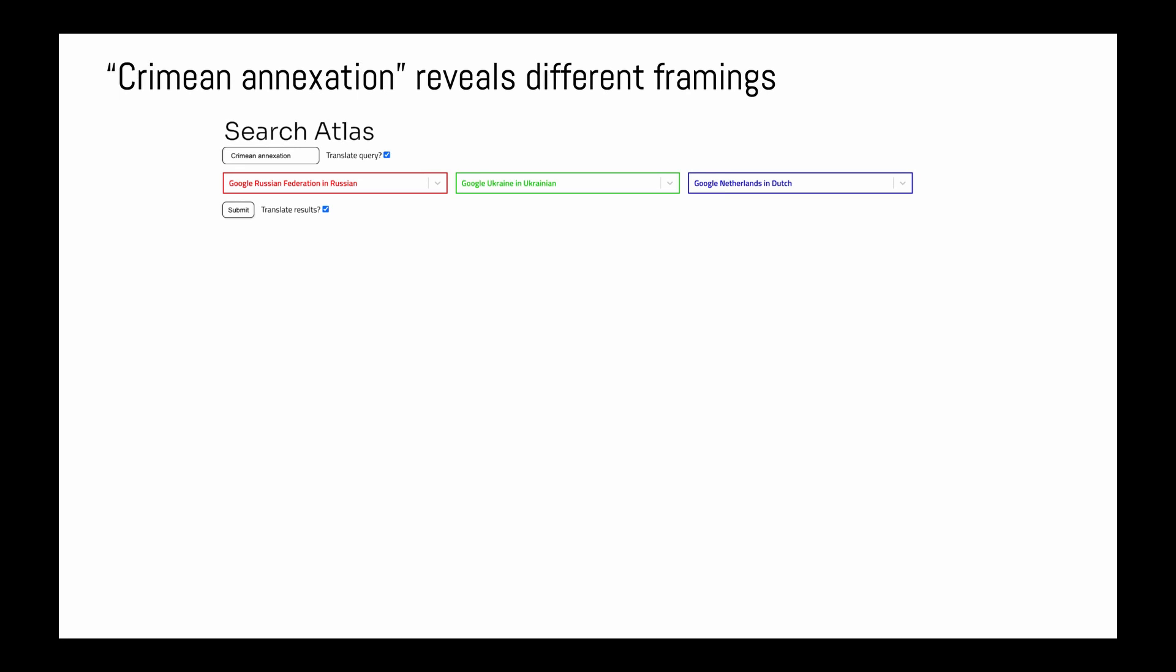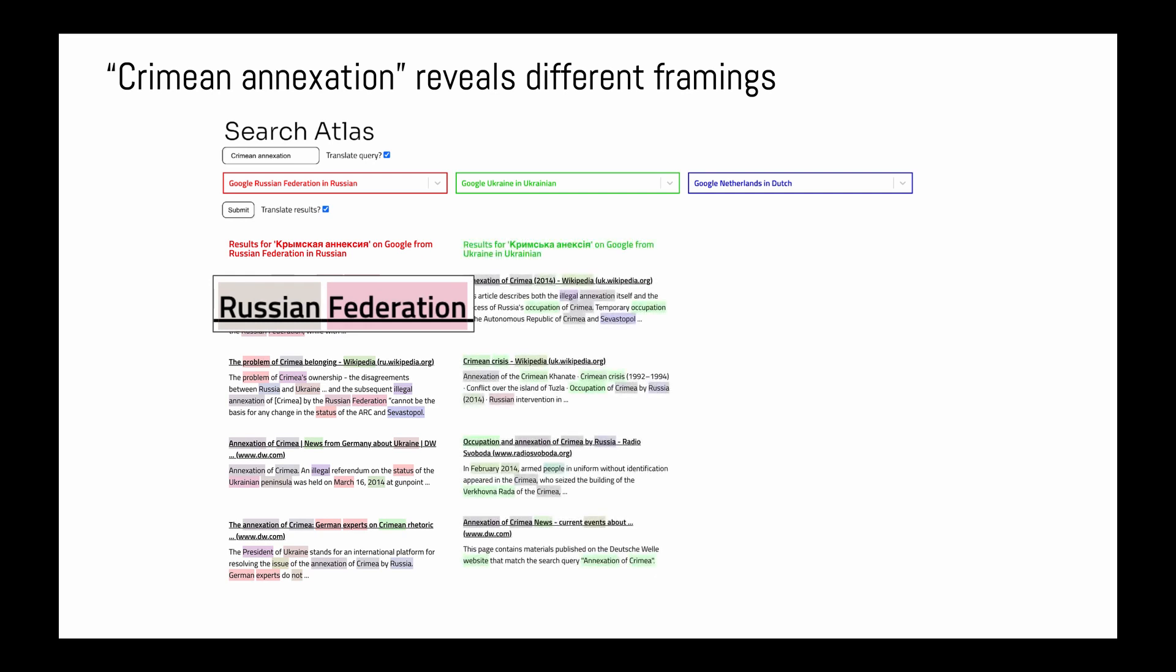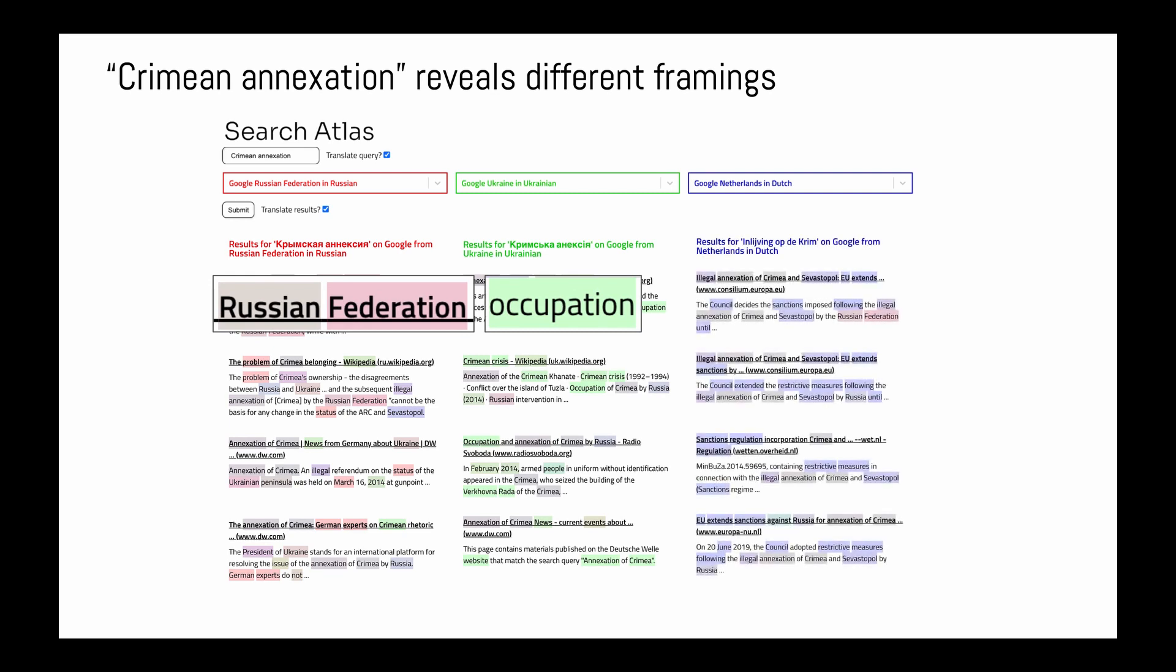These are the results for a search for Crimean annexation in Russia, Ukraine, and the Netherlands. In Russia, the results frame the issue in terms of whether Crimea belongs to the Russian Federation. In Ukraine, they frame the issue as an occupation. And in the Netherlands, they focus on the European Union's sanctions on Russia.